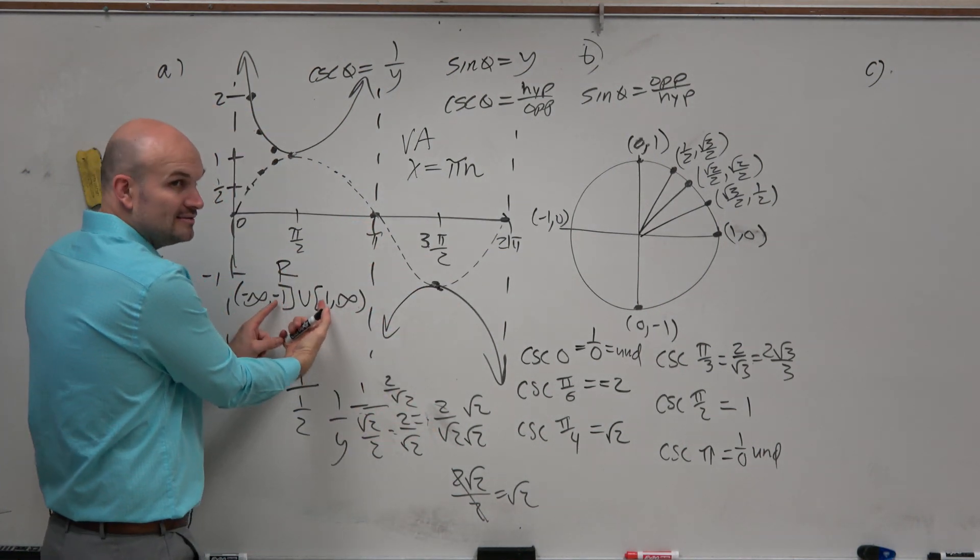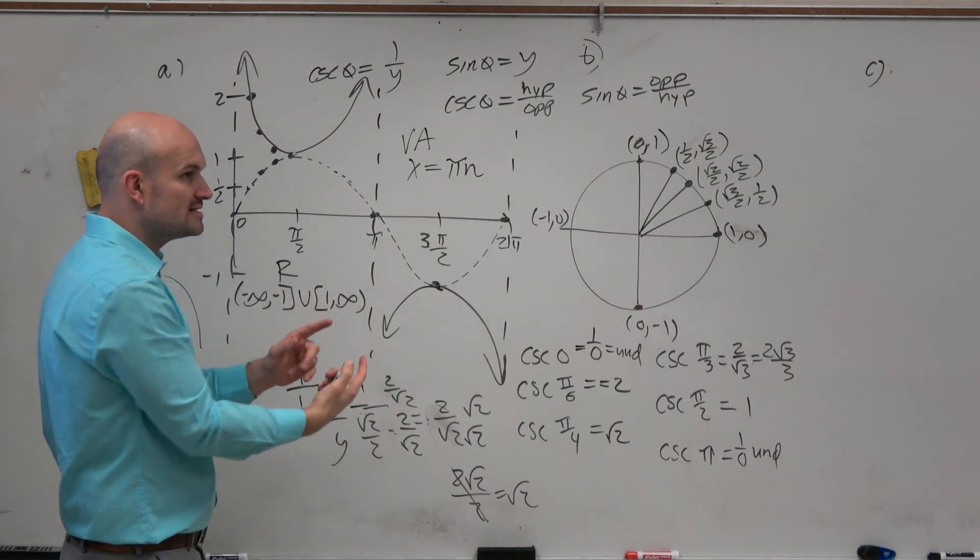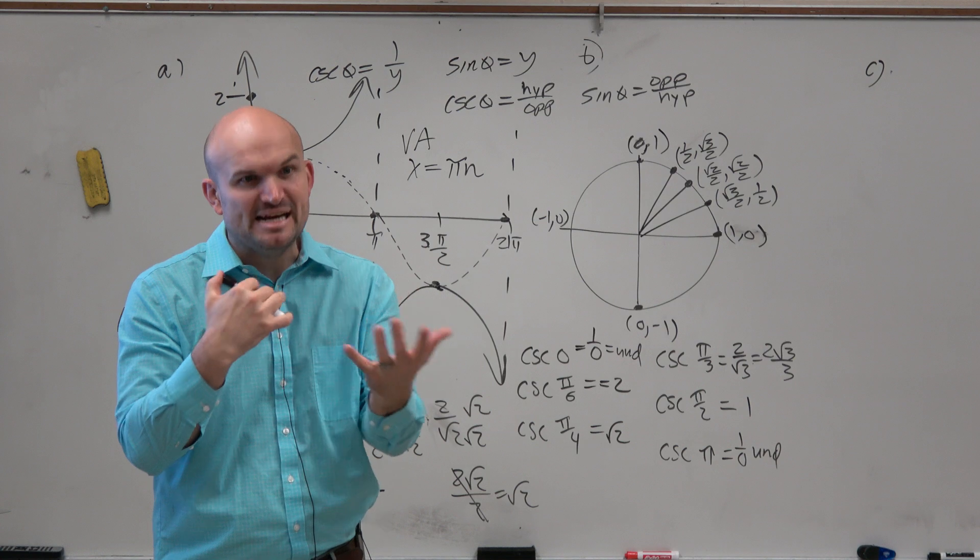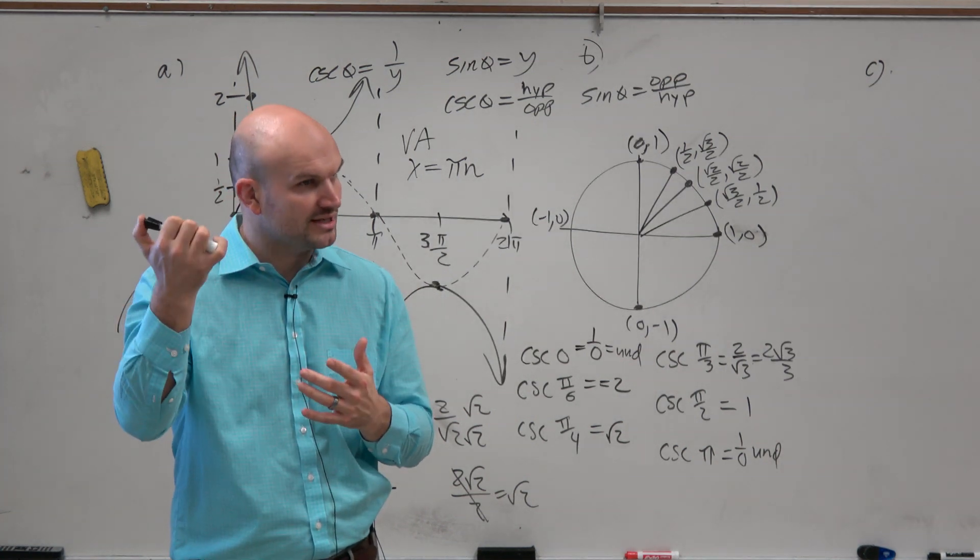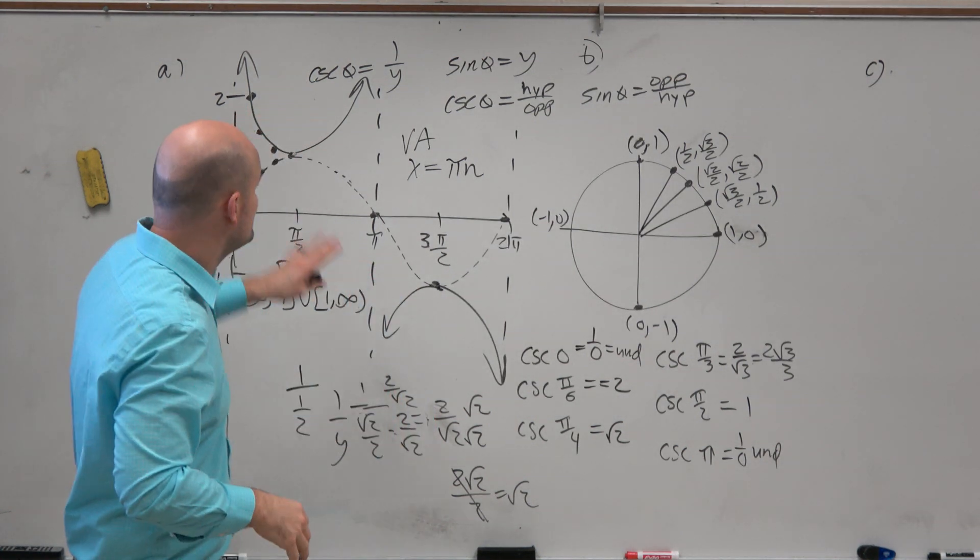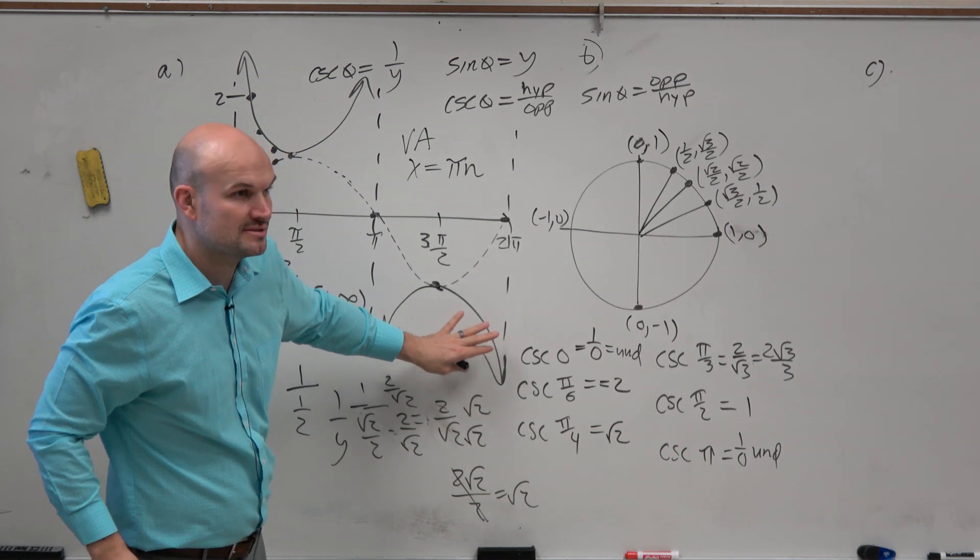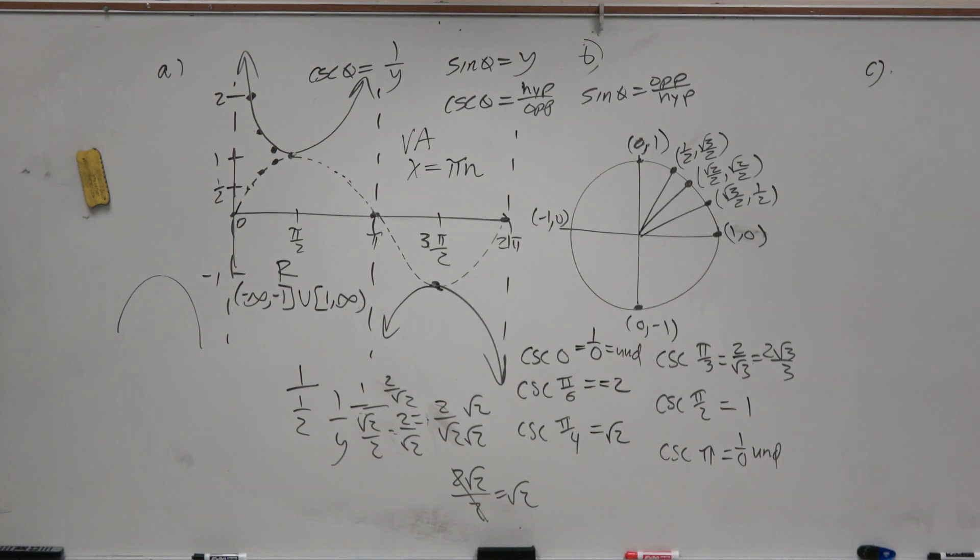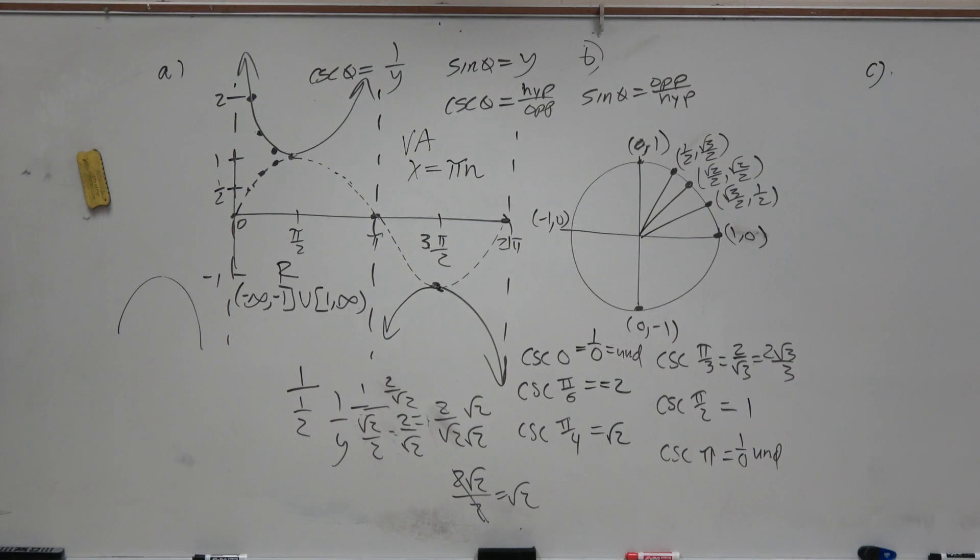Obviously, they share negative 1 and 1. They share those points. But besides that, you can see that kind of opposite mirrored relationship. That's what I'm trying to really get to. It's just that mirrored relationship. You see the mirrored relationship in the graphs. So that's just kind of the basics of cosecants.